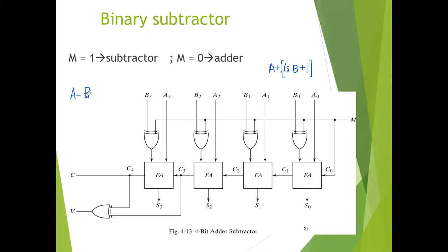This will be valid only if A is greater than or equal to B, or gives the 2's complement of B minus A if A is less than B. For signed numbers, if we have to perform the operation of A minus B, then A should be greater than or equal to B. In the case of signed numbers, we always have to take the 2's complement of B minus A if A is less than B. For signed numbers, the result of A minus B also has a condition of overflow which we will discuss in this topic.